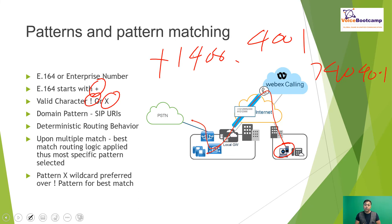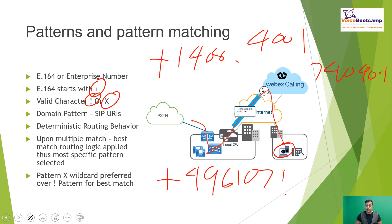The exclamation mark wildcard can only occur once, at the end, and only in an E.164 pattern. For example, you could create a pattern for Germany by typing +49 followed by 6107 and then an exclamation mark. That will match all national numbers in Germany — country code 49 — starting with 6107 and followed by any number after that. For enterprise numbers, the pattern could be a 4-digit, 5-digit, or 10-digit number.